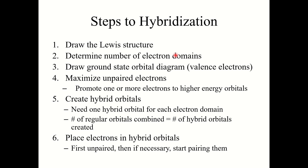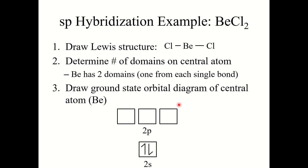Now let's talk about how we figure out hybridization. We'll go through it the long way first, and as you practice you'll be able to quickly spot the hybridization of atoms. To figure out the hybridization: first, draw the correct Lewis structure; then determine the number of electron domains on the central atom; draw a ground state orbital diagram; maximize the number of unpaired electrons; then create your hybrid orbitals and place electrons in them — first unpaired, then pair if necessary.